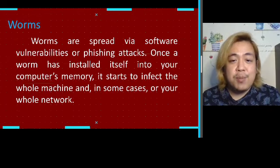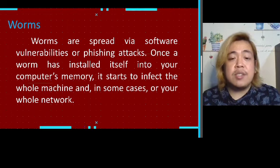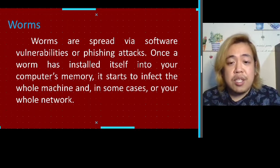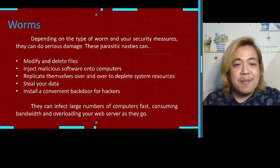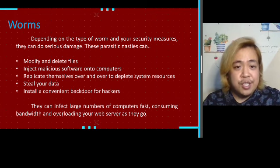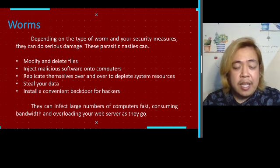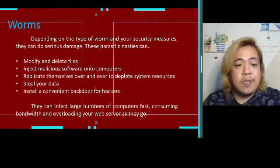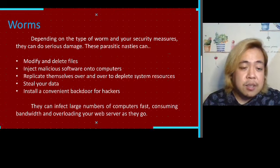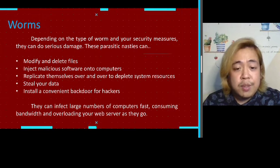Worms are spread via software vulnerability or phishing attacks. Once a worm installs itself into your computer's memory, it starts to infect the whole machine and in some cases your whole network. Depending on the type of worm and your security measures, they can do serious damage. These parasitic programs can modify and delete files, inject malicious software into computers, replicate themselves to deplete system resources, steal your data, install backdoors for hackers, infect large numbers of computers, consuming bandwidth and overloading web servers.